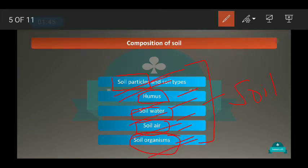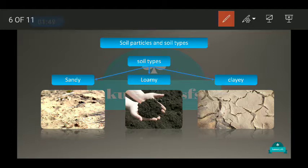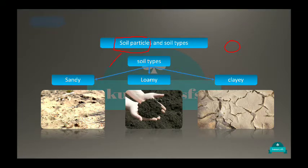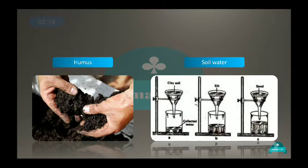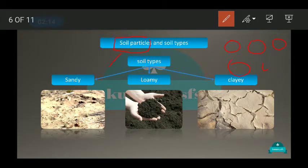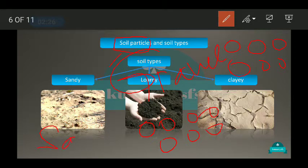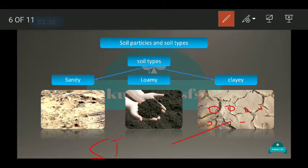Soil has particles of different sizes. Depending upon the size of particles: if the soil has bigger particles, we call it gravel; if it has medium or slightly smaller particles, we call it sand; and if the soil has very fine particles, we call it silt or clay.